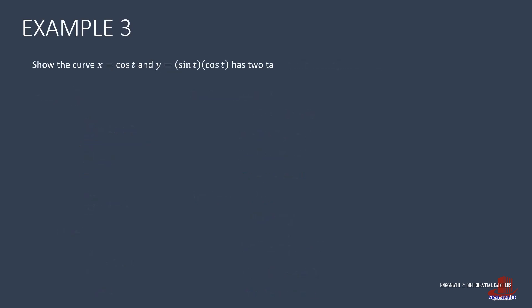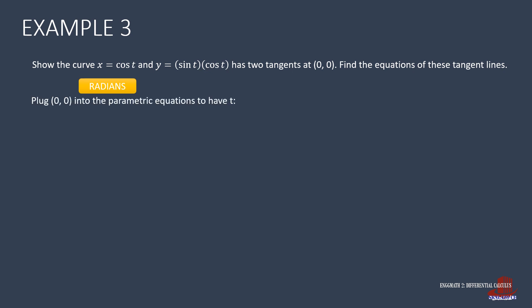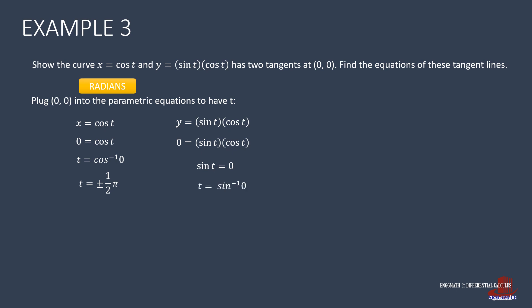The next example proves that the parametric curve has two pairs of tangents and normals at (0, 0). Note: use radians mode. From x = cos(t) = 0, we get t = ±π/2. From y = sin(t)·cos(t) = 0, we get t = 0 (from sin(t) = 0) or t = ±π/2 (from cos(t) = 0). Taking the value of t that exists in both equations, t = ±π/2.